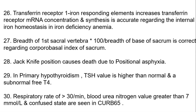In primary hypothyroidism, TSH value is higher than normal and free T4 is subnormal. Respiratory rate of more than 30 per minute, blood urea nitrogen values greater than 7 mmol/L, and confused state are seen in CURB-65 criteria.